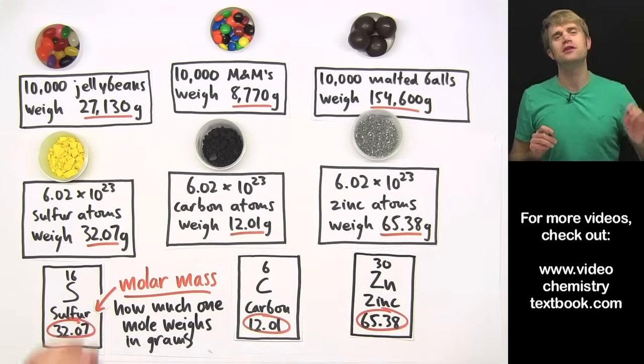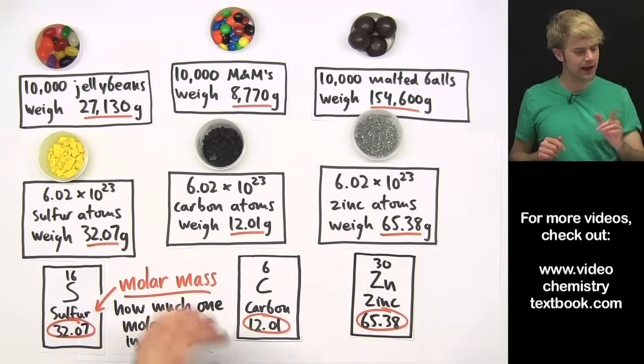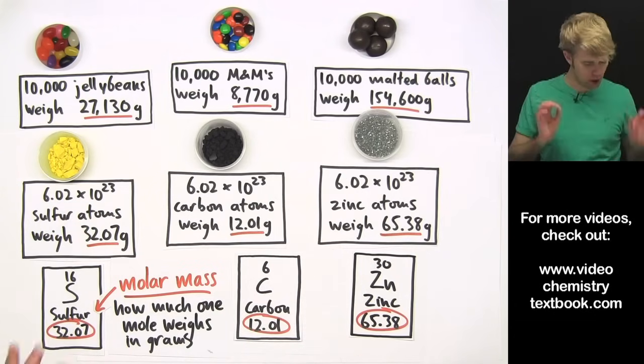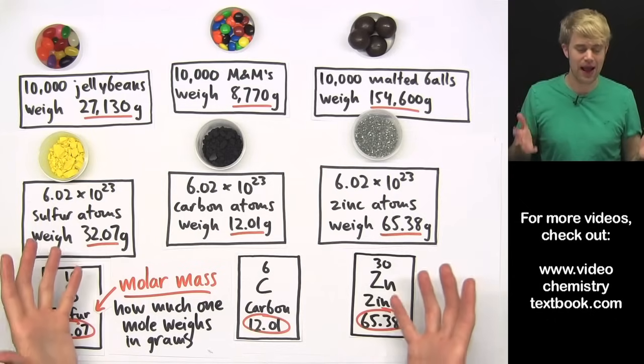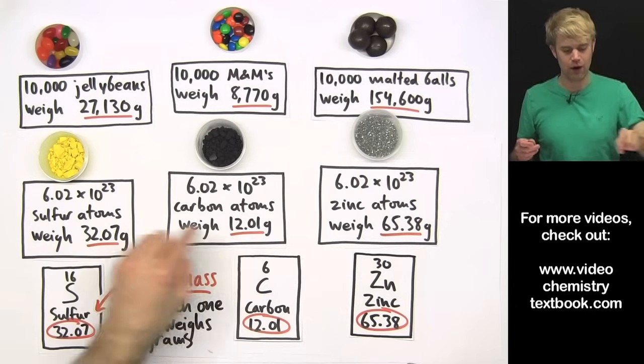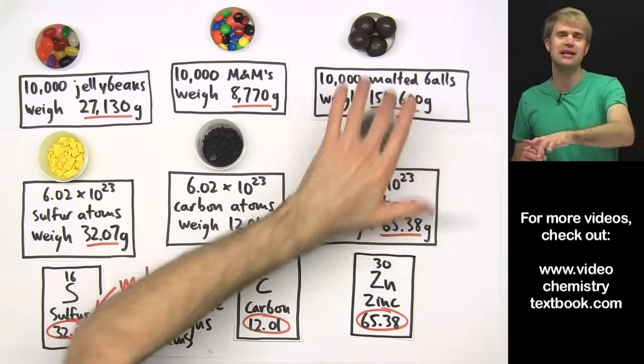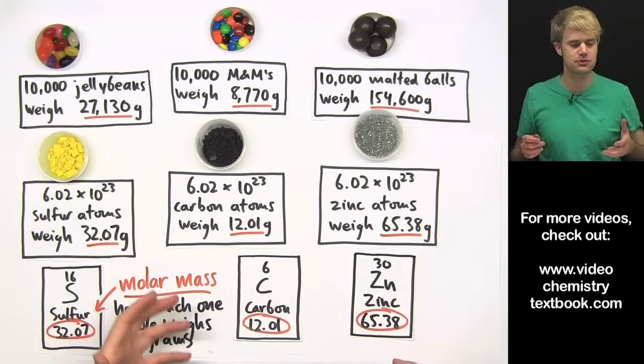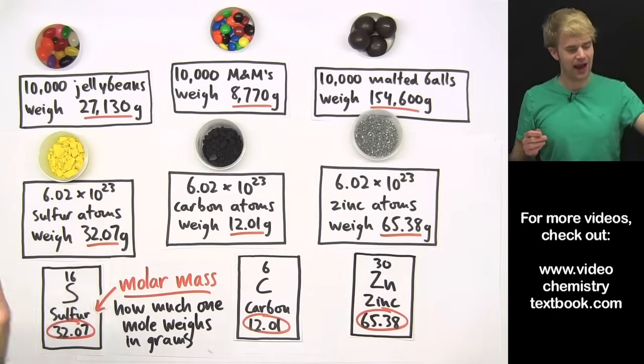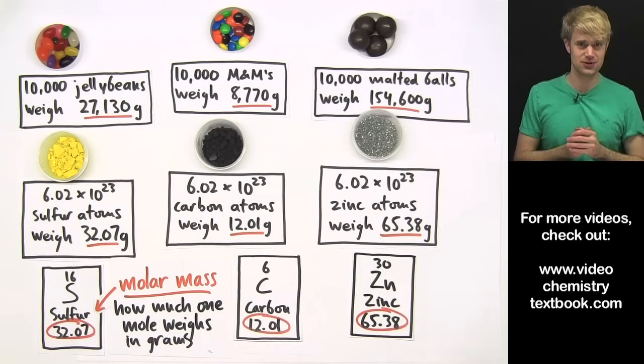So if I want 602 hexillion, one mole of any kind of atom, all I got to do is look on the periodic table and find out how much a mole of that atom weighs. And then I don't have to count any atoms. All I have to do is just weigh out this amount on a scale. This is just like me being lazy in the candy factory. I don't want to have to count out these jelly beans or M&Ms, so I can just weigh them instead. I can do all my counting by weighing, and that's what I do with these atoms.